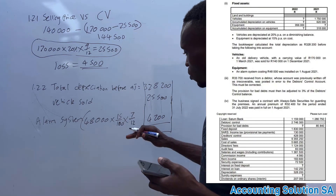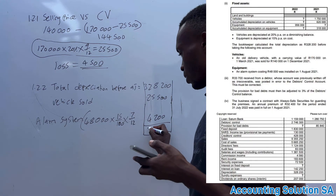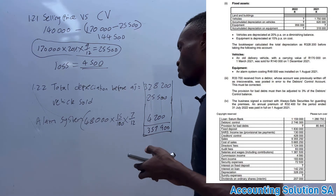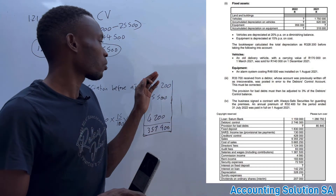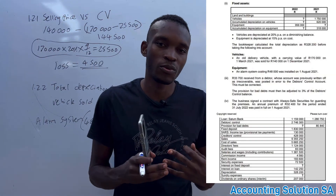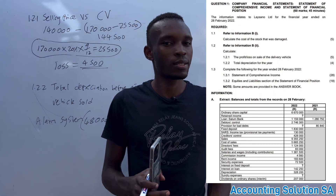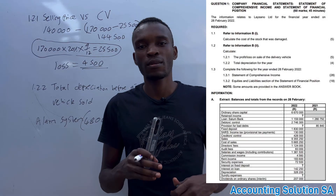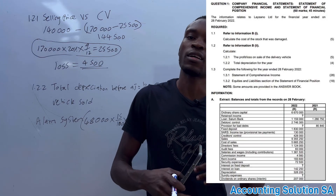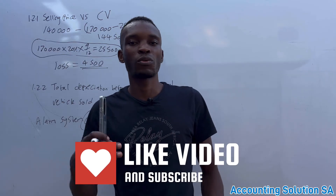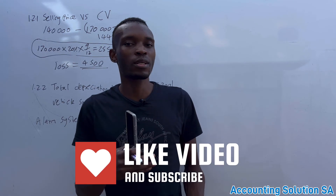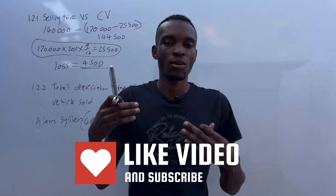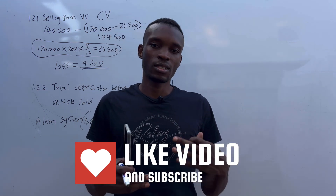We then calculate the total of everything and we get R357,900. That is how you calculate depreciation. I hope you enjoyed this — please don't forget to join our extra classes every Friday and Saturday, only R6 for Grade 12 learners. Just WhatsApp us so that you can get the banking details, and then we will add you to the WhatsApp group where you can ask any questions. The study guide is still available.